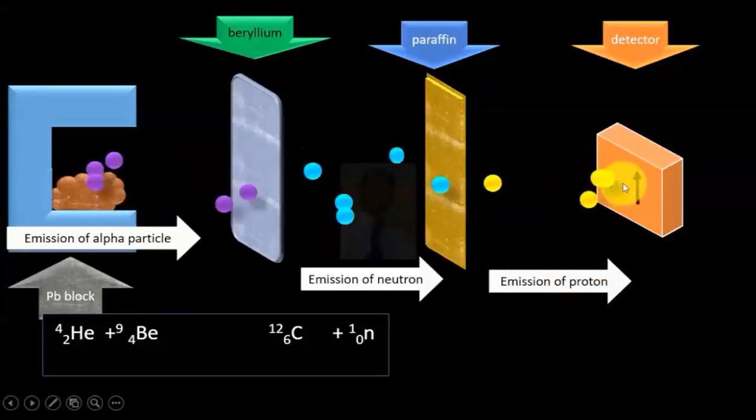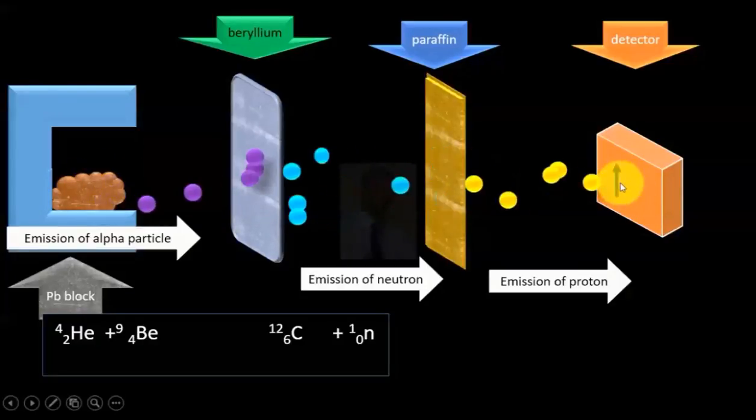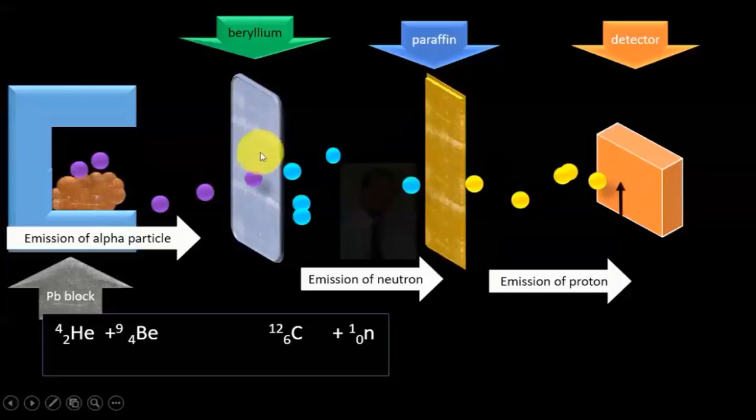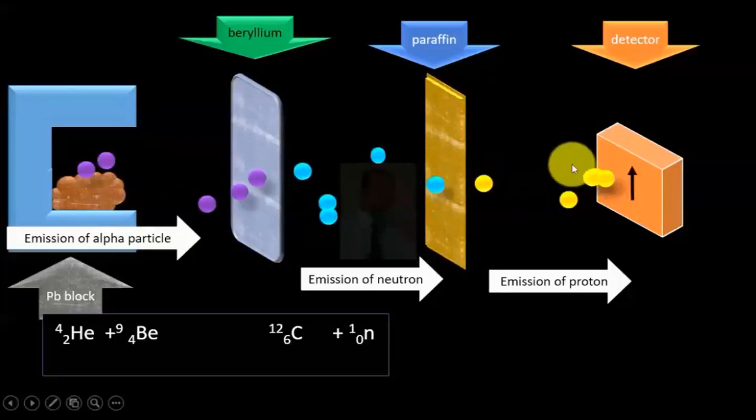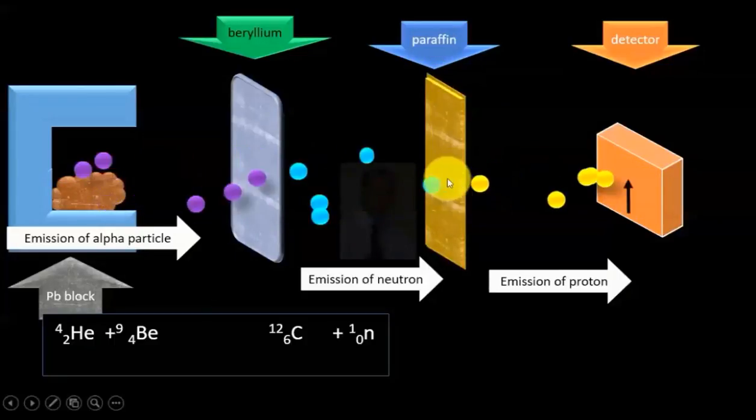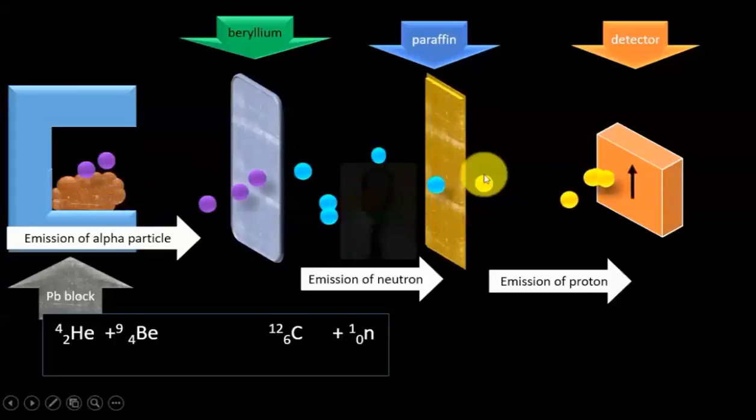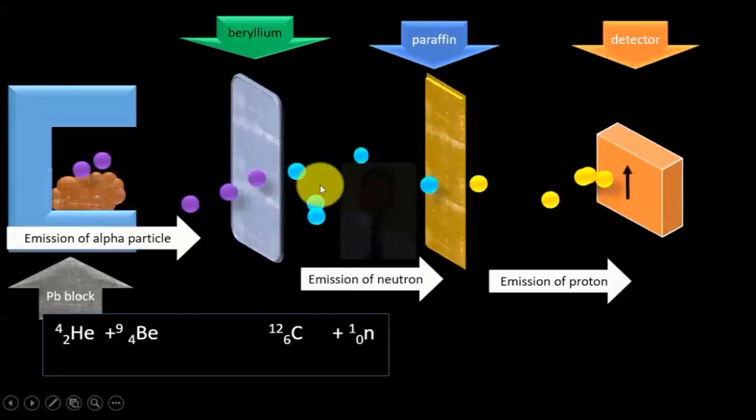The detector in front showed deflection, which means some radiations were coming onto it. But we already know that radiations coming from beryllium material were chargeless, so how could we get radiations with charges? Actually, these protons were coming from paraffin material. These protons were ejected out by neutrons coming from beryllium material.